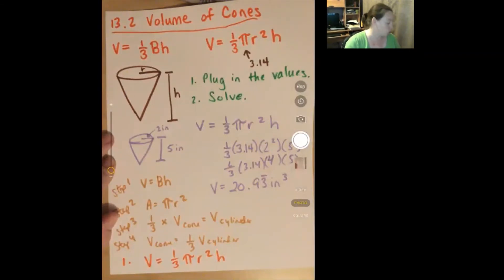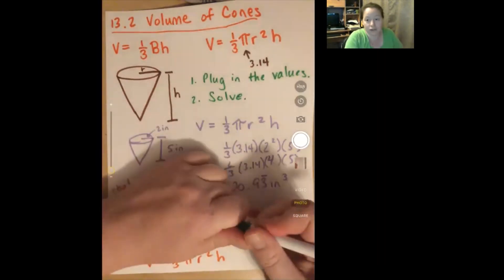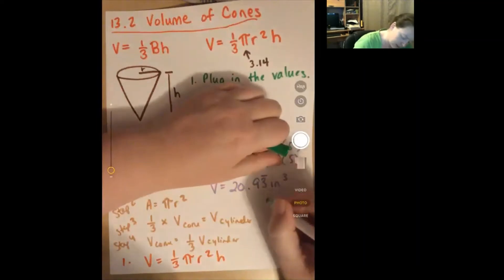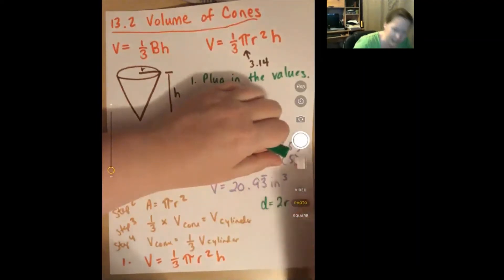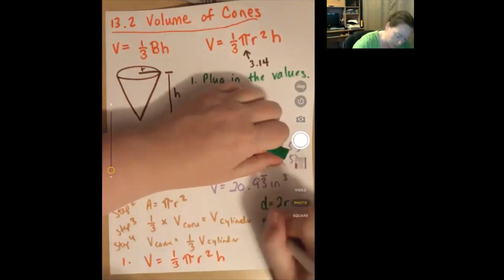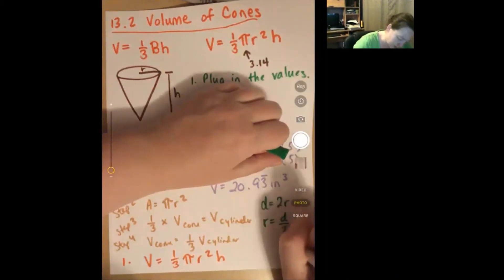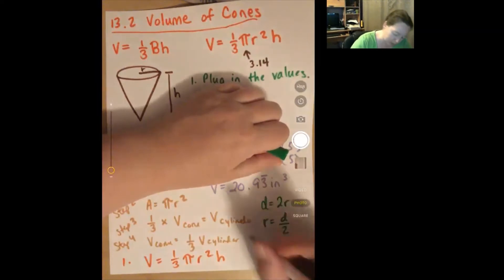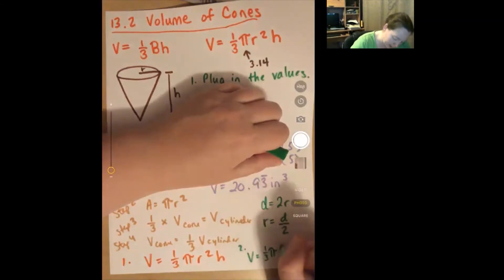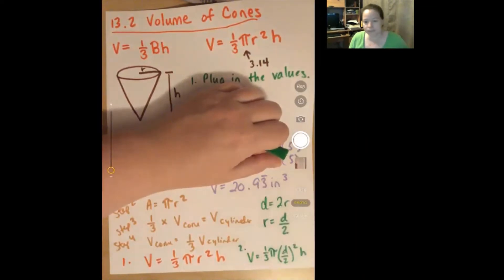Number two: how could you rewrite the formula for the volume of a cone using diameter instead of radius? Diameter equals two radiuses, so one radius equals diameter divided by two. We just plug it in: volume equals one-third pi times (diameter over two) squared times h. All I did was substitute d over 2 in for r.